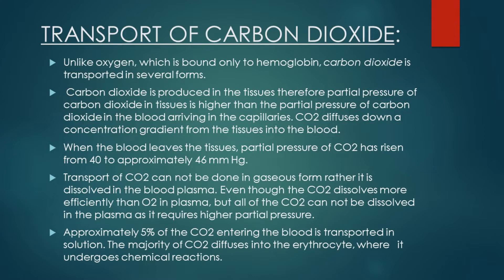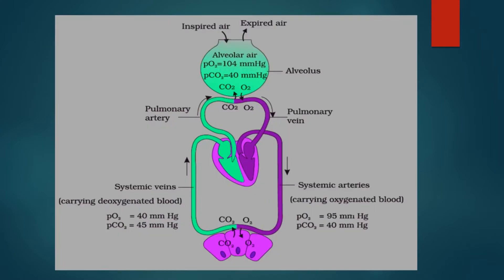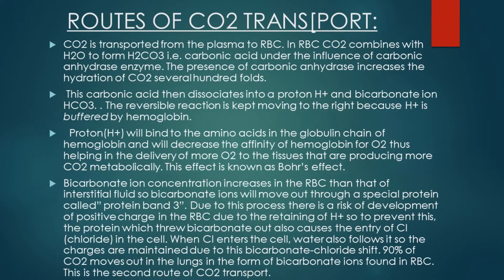In the red blood cells, carbon dioxide undergoes various chemical reactions and is transported. Even though carbon dioxide is more soluble in blood plasma than oxygen, only 5% is transported in solution form. Carbon dioxide is transported from plasma to RBCs, where it combines with water already present in the red blood cell, giving us carbonic acid. This carbonic acid is produced under the influence of an enzyme known as carbonic anhydrase, and the presence of carbonic anhydrase increases the hydration of carbon dioxide several hundred-fold.